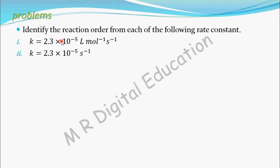k equals 2.3 times 10 to the power minus 5 per second. From this rate constant we have to identify reaction order.